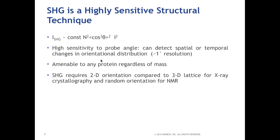SHG is very sensitive to conformational change and protein structure. The simplest governing equation describes the intensity of SHG — the number of blue photons detected per unit time — which is dependent on a subconstant times N squared, N being the number of molecules per unit area on the lipid bilayer membrane, times I squared where I is the fundamental 800 nanometer red light intensity, times cosine cubed theta, where theta is the long axis of the dye. As the axis of the dye changes due to conformational change, closer to or farther from the z-axis, we detect those changes in intensity very sensitively.